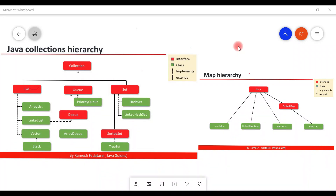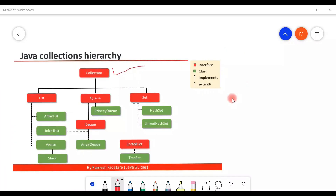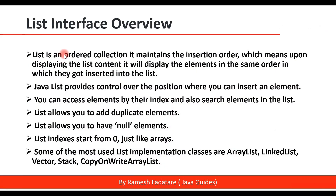Welcome back to the Java Collections Framework series. In this video we'll cover the List interface. A List is an ordered collection — it maintains the insertion order, which means upon displaying the list content it will display the elements in the same order in which they were inserted.